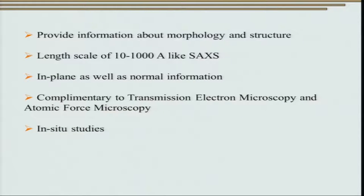GISAXS provides information not only about morphology but also about the chemical structure of the material. It gives us information in the same length scale as SAXS, ranging from about 10 to 1000 angstroms. Since grazing incidence small angle X-ray scattering is a surface characterization technique, it gives us information not only in-plane but also out-of-plane or normal to the plane, which is very important for doing what is known as X-ray reflectivity.